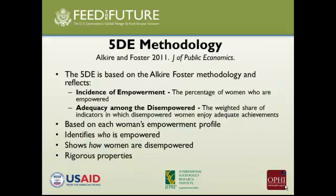Starting conceptually with the first one: the 5DE reflects, like any other M0 measure, both the incidence of empowerment and the intensity. In a poverty measure we look at the head count — the incidence of poverty, or disempowerment — but framed positively, it's the incidence of empowerment. Similarly, in poverty we look at the intensity of deprivations among the poor, but here we look at one minus that: the adequacy that disempowered people nonetheless have sufficiency in.